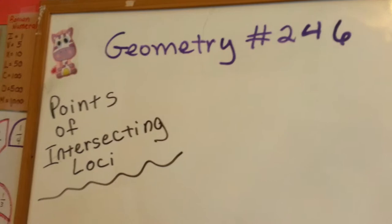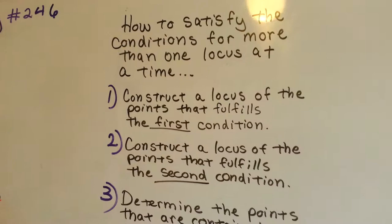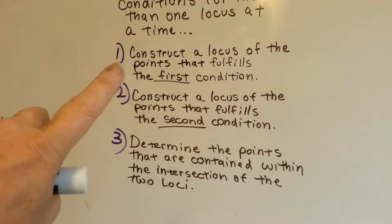Geometry 246, Points of Intersecting Loci. Alright, how to satisfy the conditions for more than one locus at a time. Here's what you do.